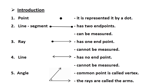The third one is ray. A ray goes endlessly in one direction. It has one end point and it cannot be measured. The next one is line. A line can be extended endlessly in both directions, so we cannot measure its length. A line has no end points and it cannot be measured.